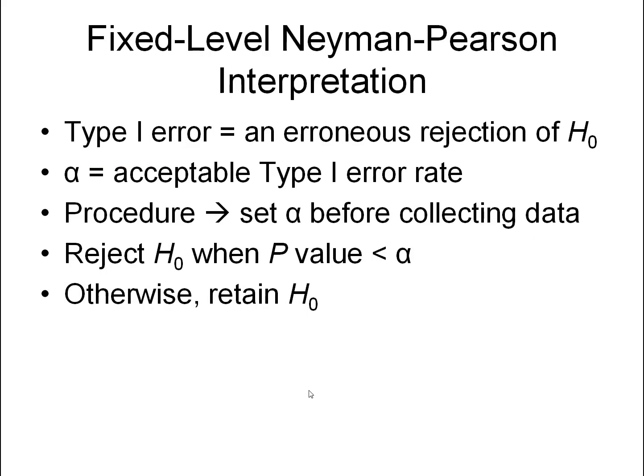The other method we'll call the Neyman-Pearson interpretation. With this method, it's based upon the type 1 error rate. A type 1 error is defined as an erroneous rejection of the null hypothesis. Now, alpha is the acceptable type 1 error rate.